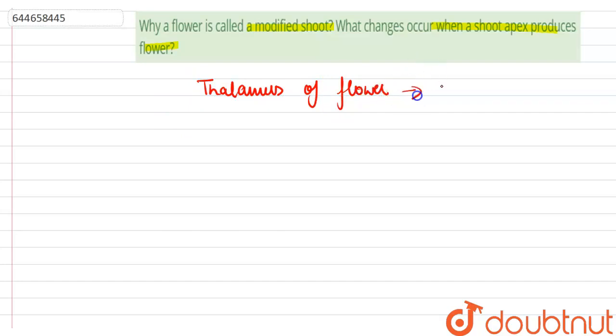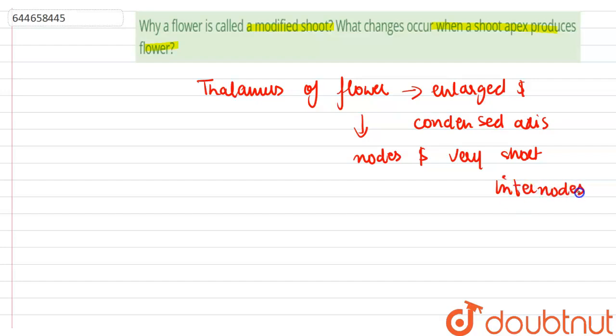is the enlarged and condensed axis. It has nodes—the thalamus has nodes and very short internodes.